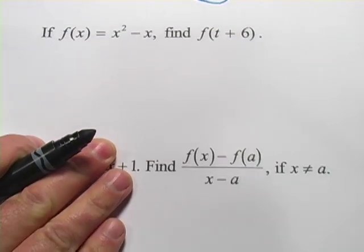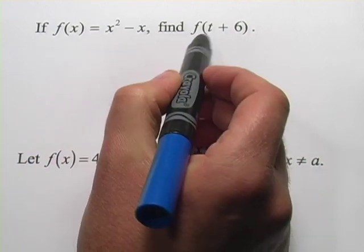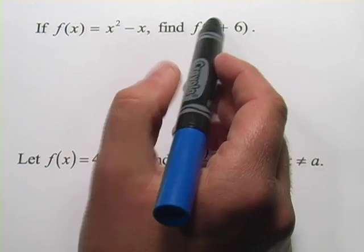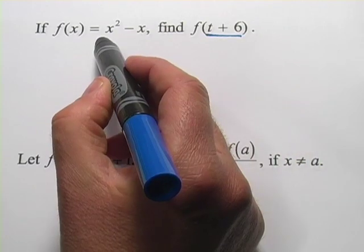Let's try another one. This one's a little bit trickier looking. We have the function x squared minus x, and we want to find f of t plus 6. Well, it's not any harder than this f of minus 4 was before. We take t plus 6, and we put it in wherever we see x.